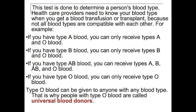If you have type AB blood, you can receive types A, B, AB, and O blood — that is called the universal acceptor. If you have type O blood, you can only receive type O blood — that is called the universal donor, meaning type O blood can be given to anyone with any blood type.